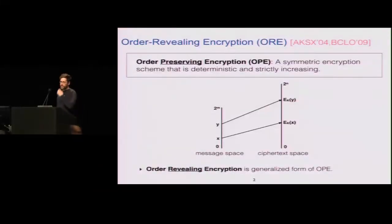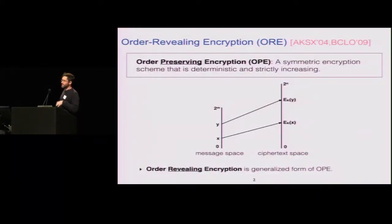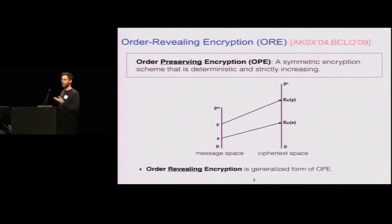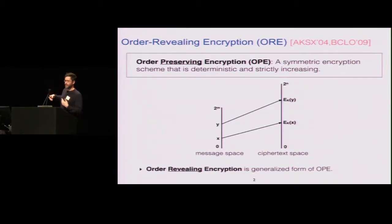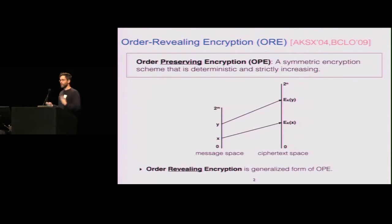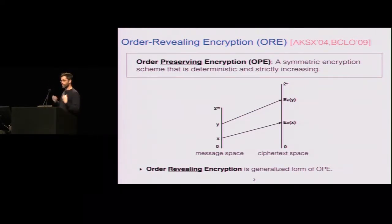This talk is about something called order-revealing encryption, which is a fairly simple primitive, most easily understood through its special case: order-preserving encryption. That's a symmetric encryption scheme that's deterministic and order-preserving — a strictly increasing function. If you think of the domain space as an ordered set of numbers, if you encrypt some x that's less than y, you'll get a ciphertext for x that is less than the ciphertext for y.